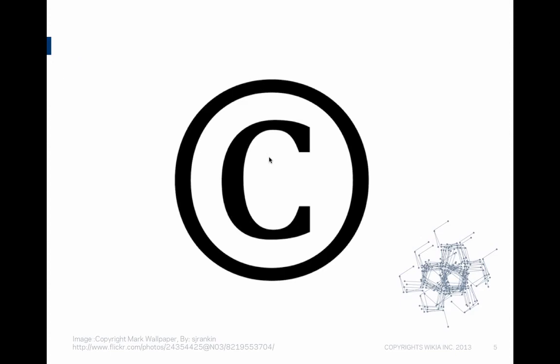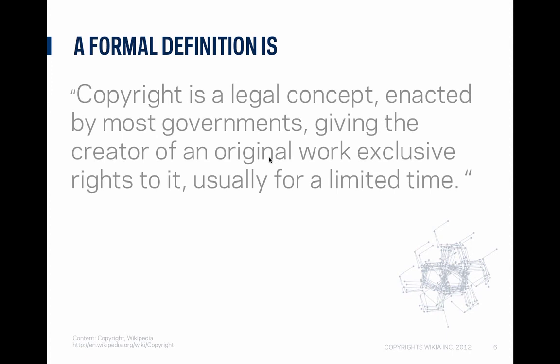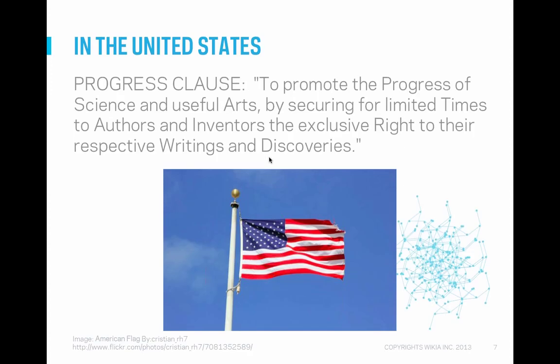You've all seen the circle C — this is the universal symbol for copyright. It's usually included somewhere on the publication, generally towards the beginning, along with the name of the owner of the copyright and the first year of publication. Wikipedia tells us that the formal definition for copyright is a legal concept enacted by most governments, giving the creator of an original work exclusive rights to it, usually for a limited time. In the U.S., copyright law is governed by federal statute — a law written by Congress. Congress gets the authority to make these laws from a specific grant in the Constitution.